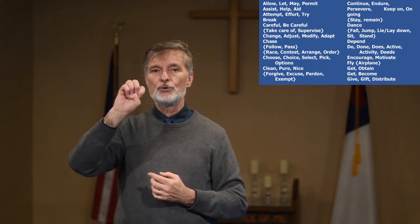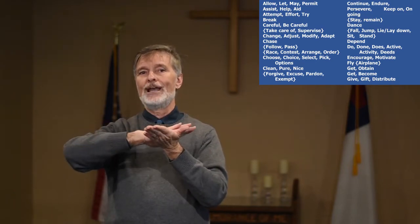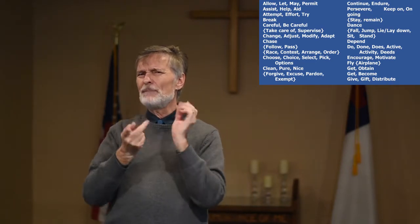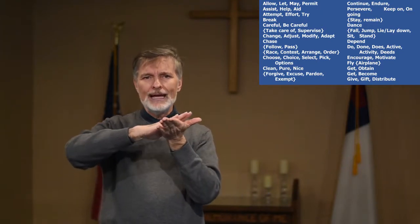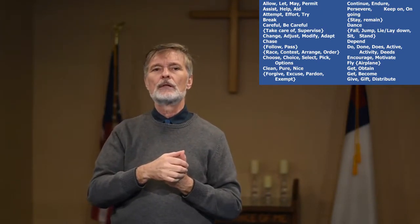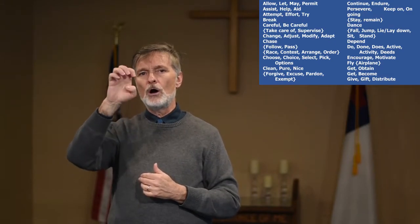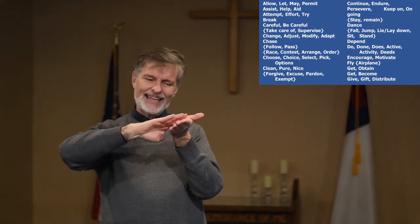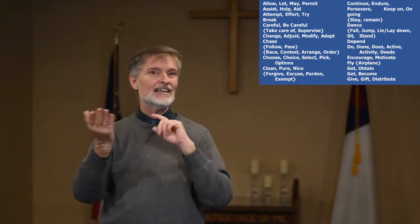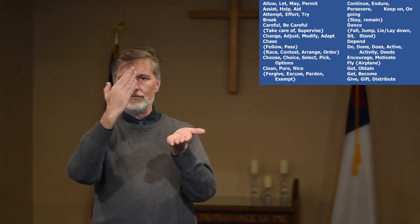Then we have clean, pure, or nice — right hand across the left one, you just wipe it clean. Some people will make clean a little firmer because you're wiping off a table. Clean is a bit firmer; pure and nice are a little softer. If you skip down to forgive, excuse, pardon, or exempt — very similar. This one uses fingers on top going across, sometimes lifted up like you're pushing it off. Forgive means you're cleaning the slate. So clean is palm on palm; forgive is fingers going across.